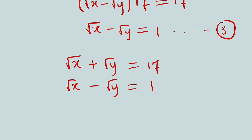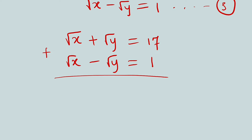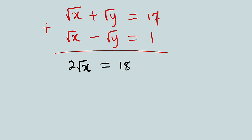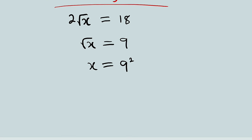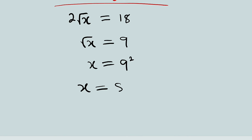I want to start by adding these two equations. If we add them, square root of x plus square root of x gives us 2 square root of x, while square root of y plus negative square root of y gives us 0. On the right-hand side, 17 plus 1 equals 18. Dividing both sides by 2, square root of x equals 18 divided by 2, which is 9. To get rid of the square root, we square both sides: x equals 9 squared.